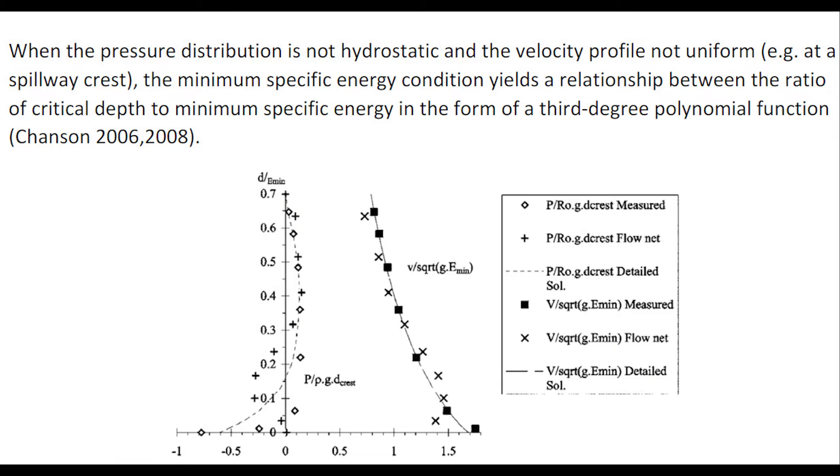When the pressure distribution is not hydrostatic, the velocity distribution is not uniform. For example, at a spillway crest, illustrated here with this example of pressure and velocity above a circular crest.